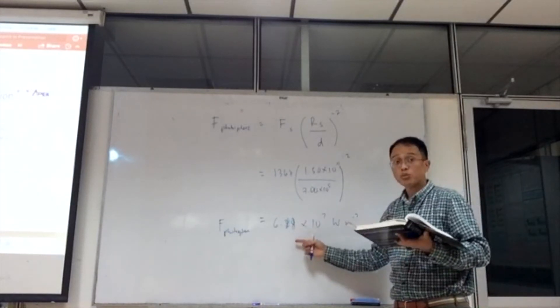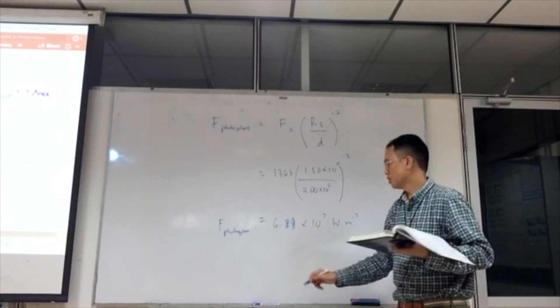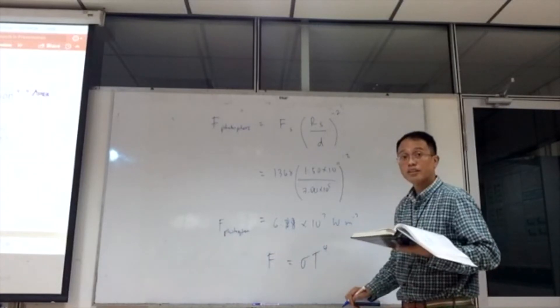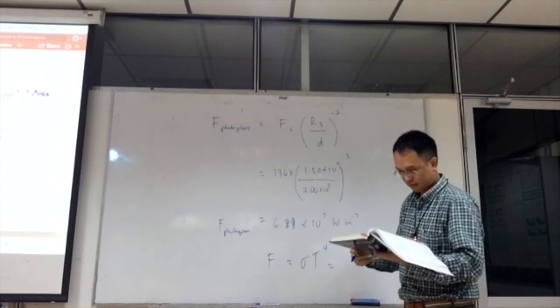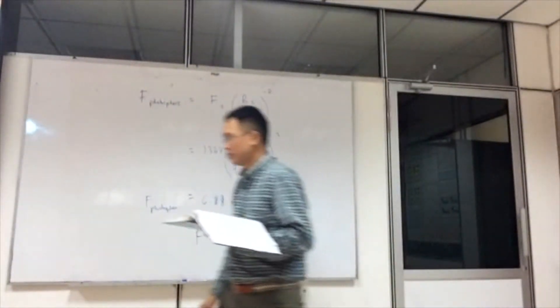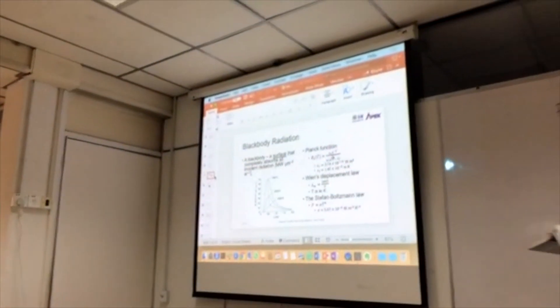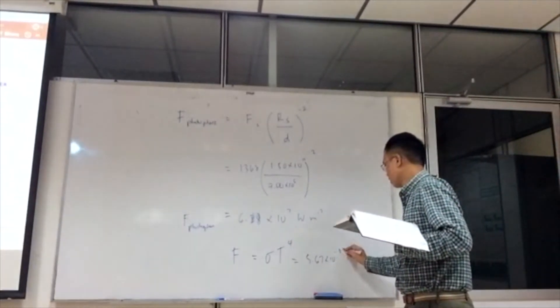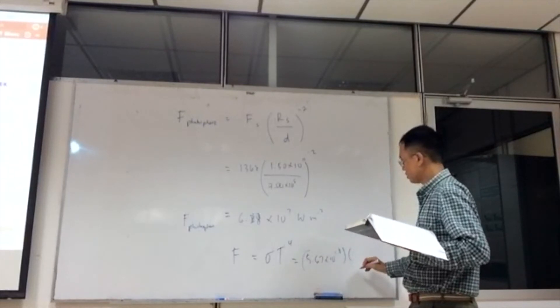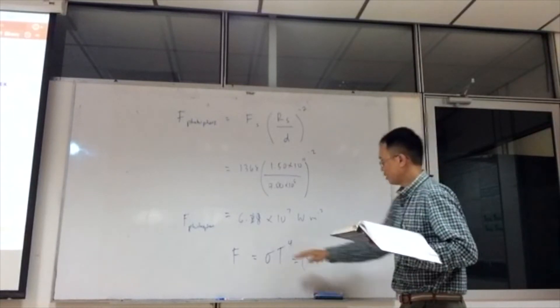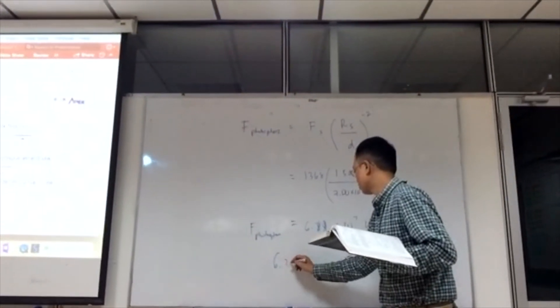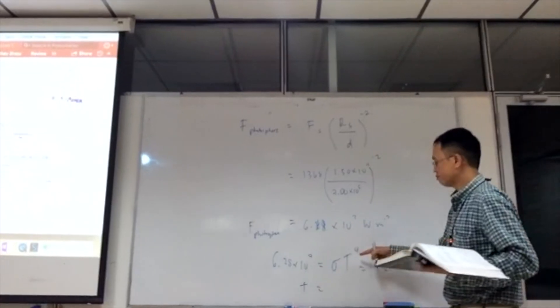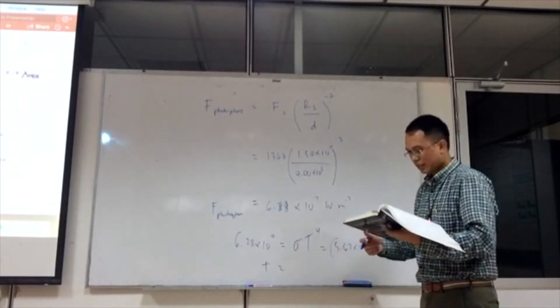So now we have the F photosphere, then we can calculate the blackbody temperature using the equation F equals sigma T to the power of 4. Sigma is that constant value, 5.67 times 10 to the power of negative 8, and then the temperature is what you want to calculate. And this F here is 6.28 times 10 to the power of 7, and we get T after you root it by 4, and you get the temperature.